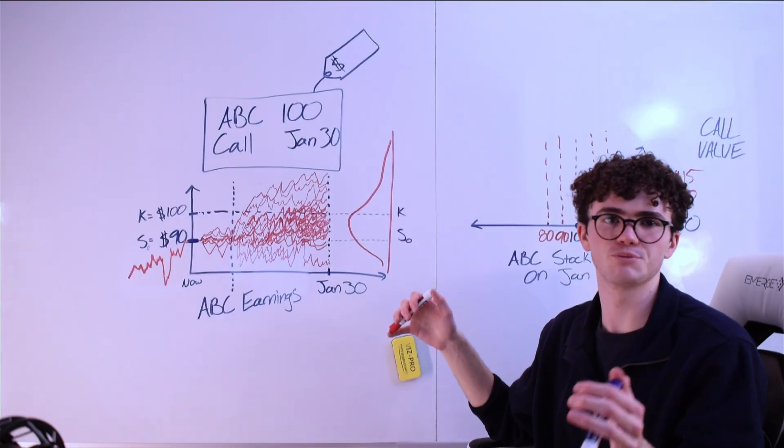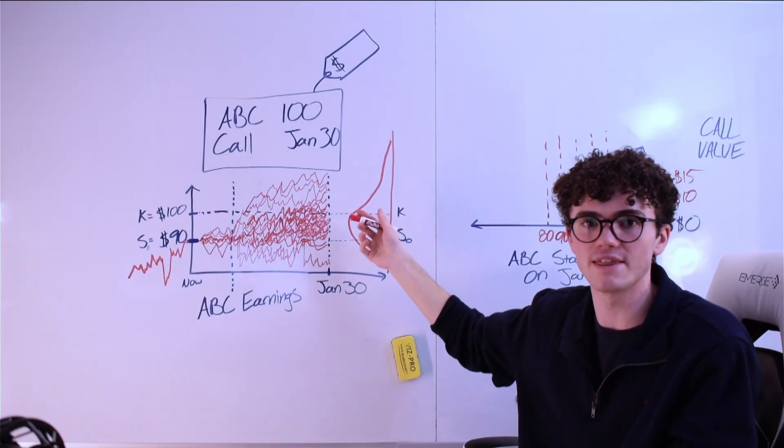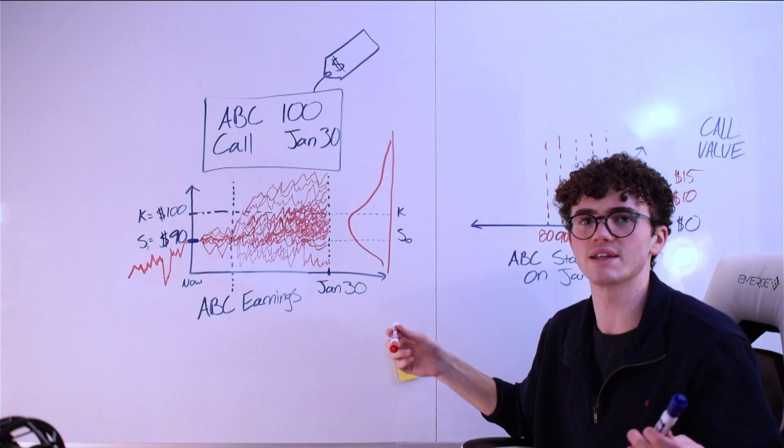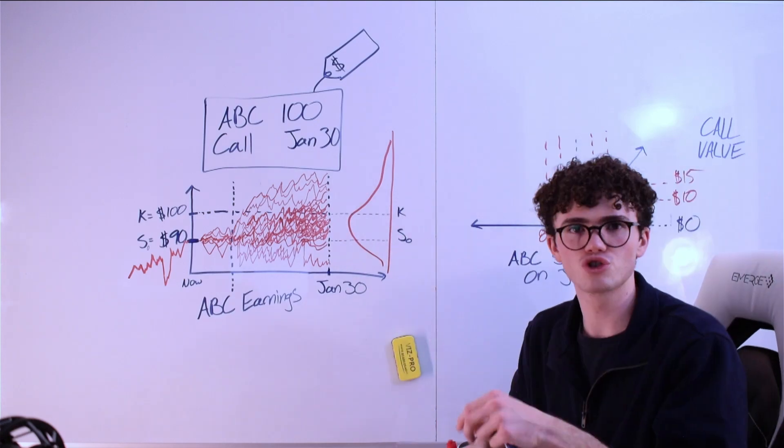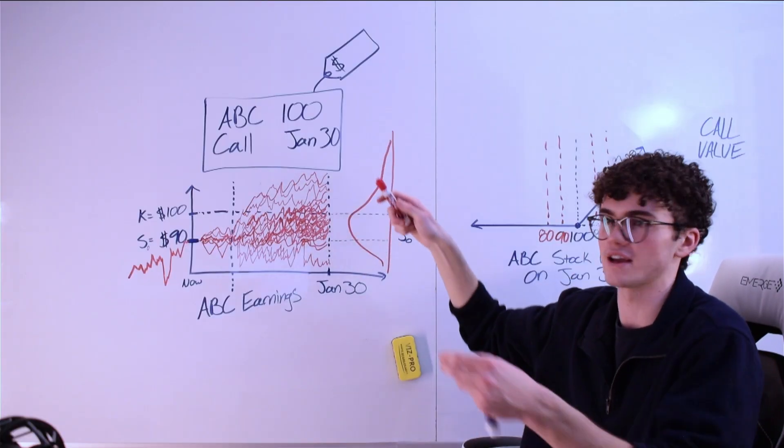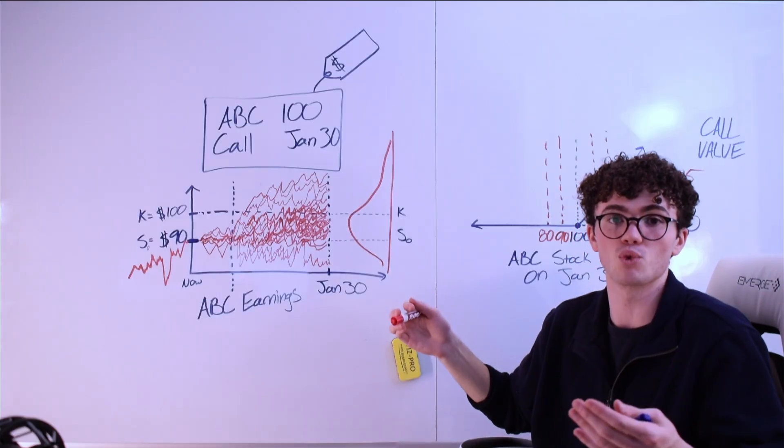So according to our forecasts, maybe the most probable outcome for ABC is $99, in which case the contract wouldn't be worth anything at expiration. Does that mean that we should be willing to pay $0 for it? Definitely not because of these huge tail events. Sure, the most likely outcome for ABC might be $99, in which case the contract is worth nothing, but we still assign some probability to these events where the contract winds up being worth a lot.